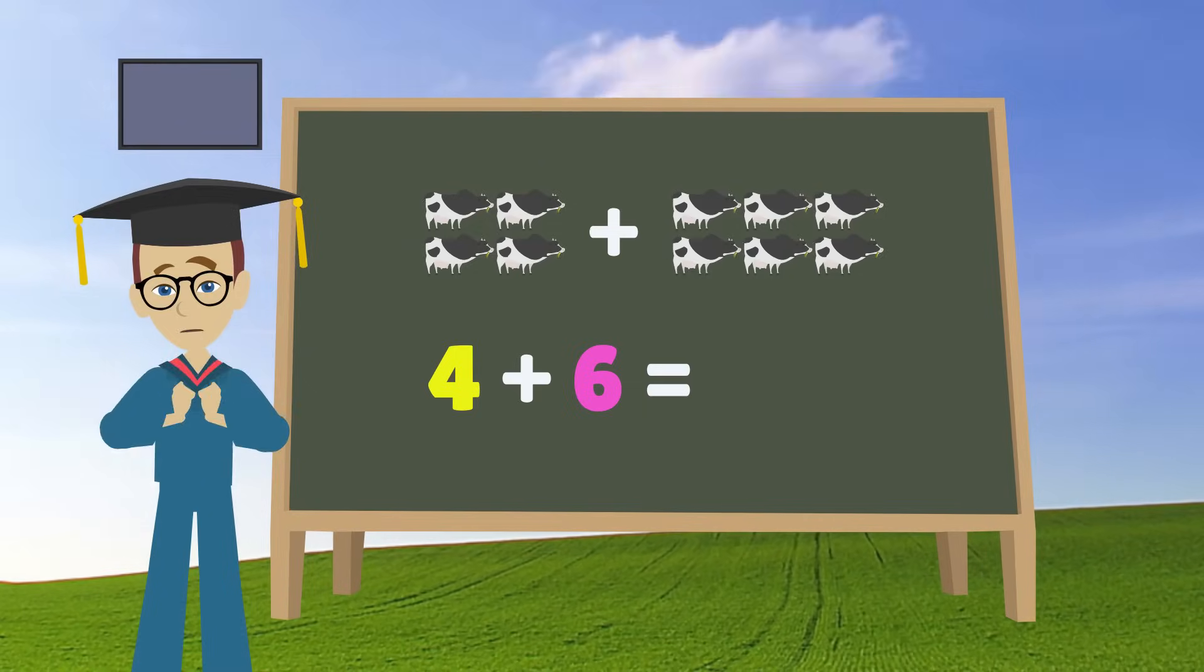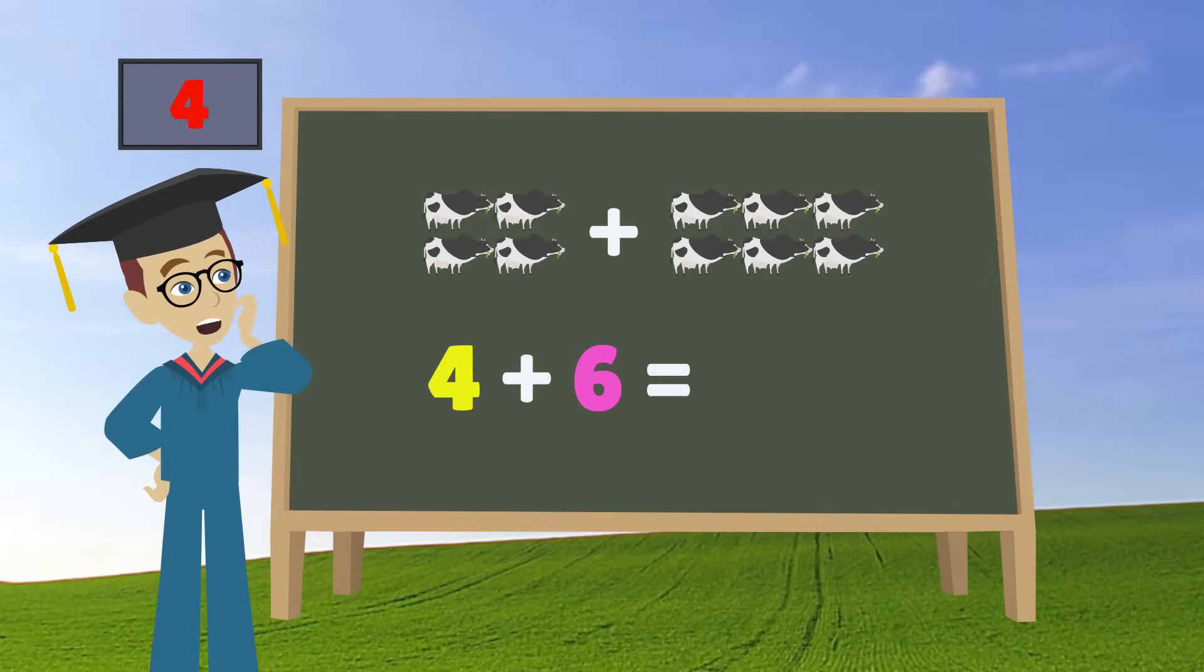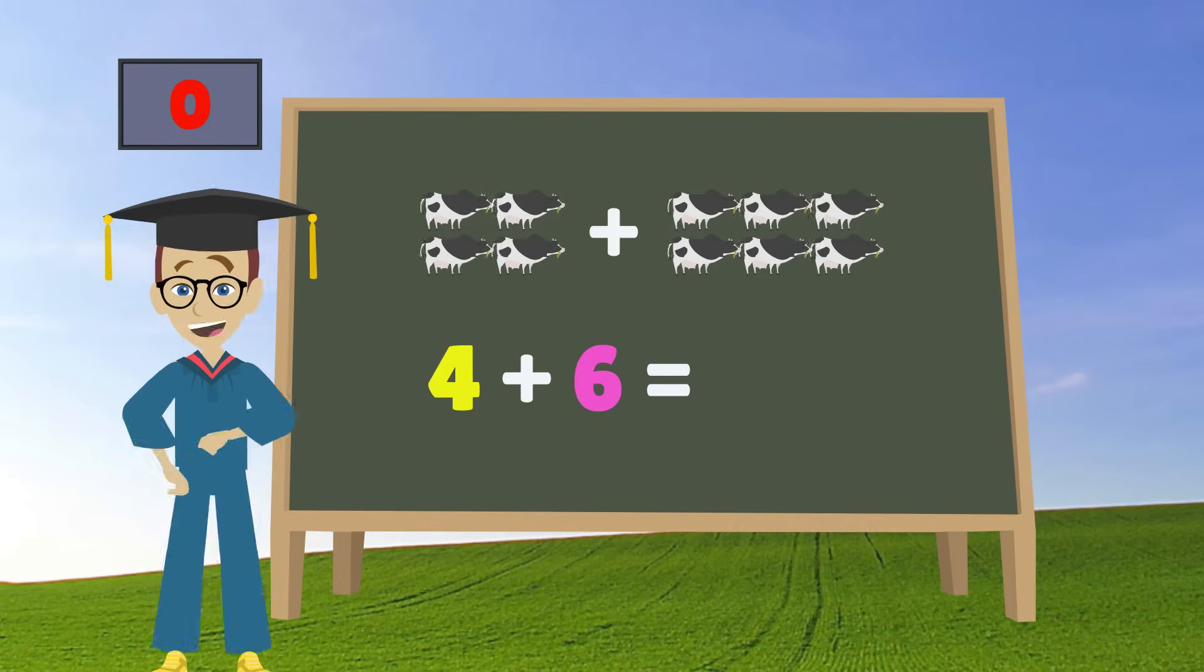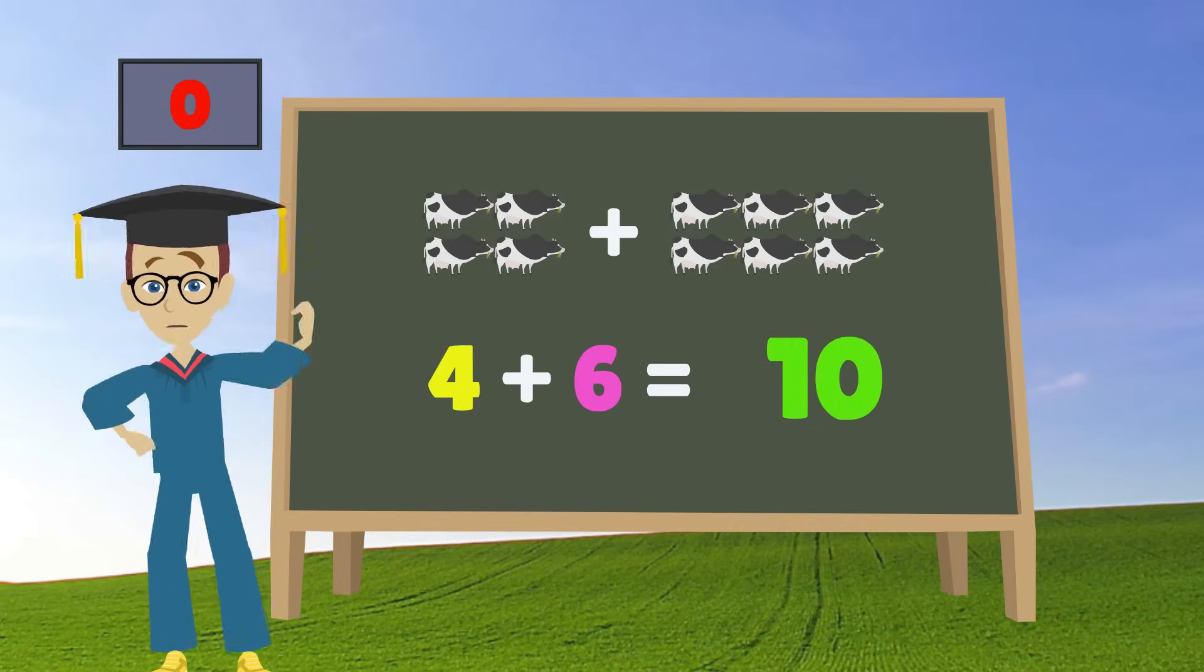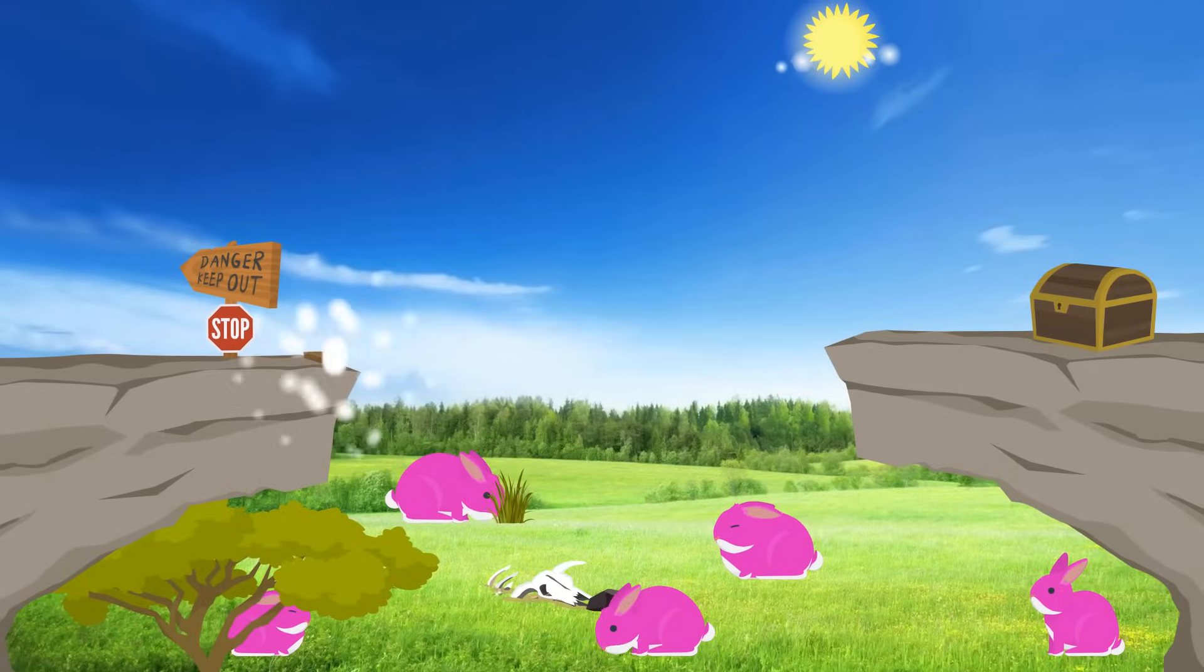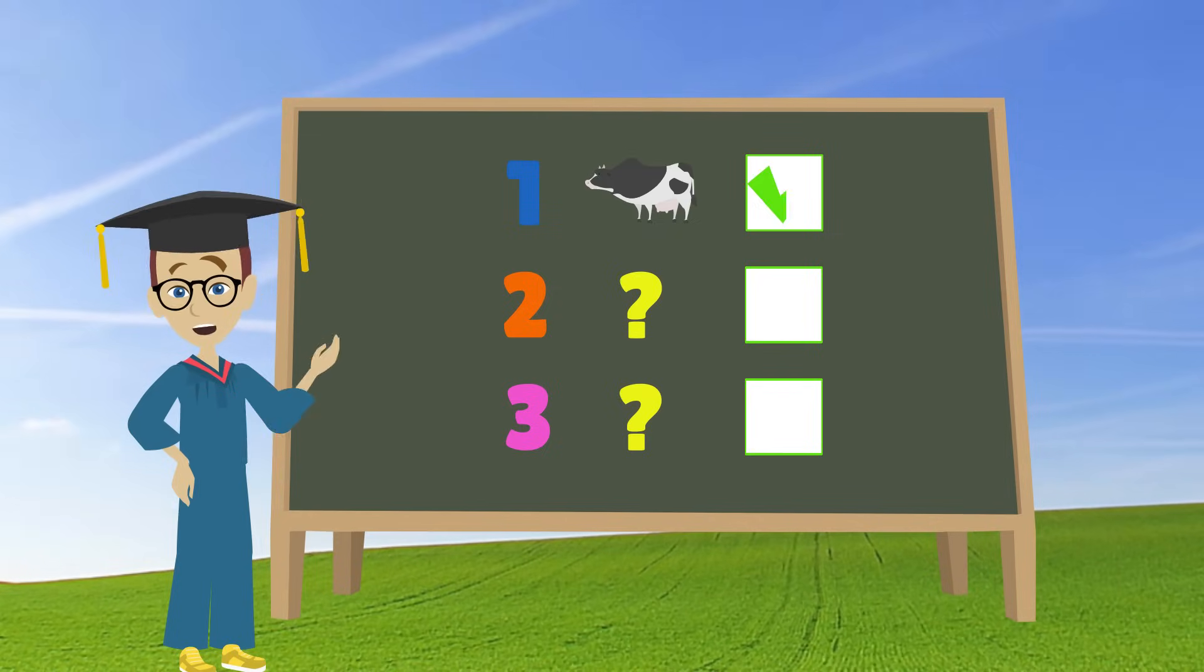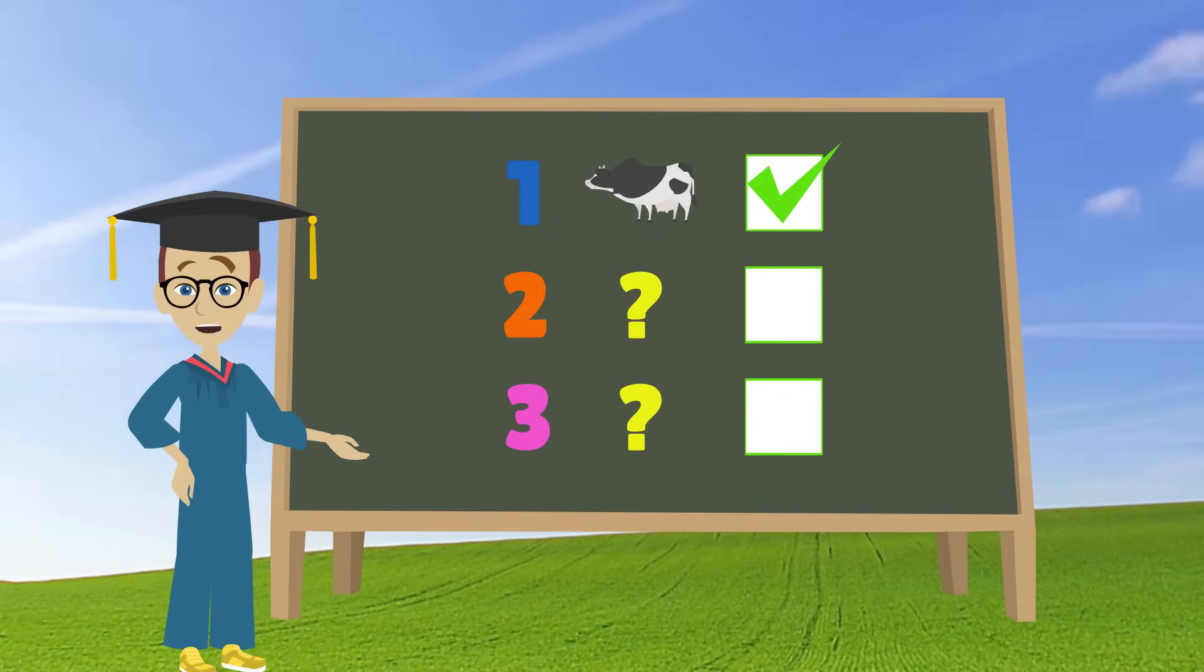Okay, we gotta be quick before the clock runs out. Wait, I think I got it. It's ten. Look, we got the first piece of the bridge. We solved the cow puzzle. Now let's move on to the next one.